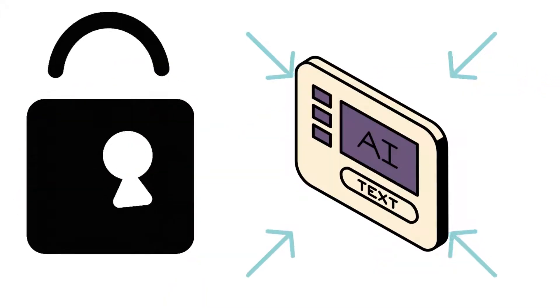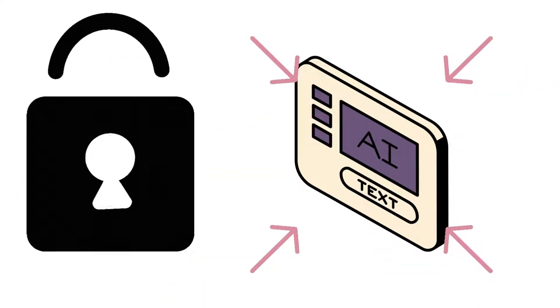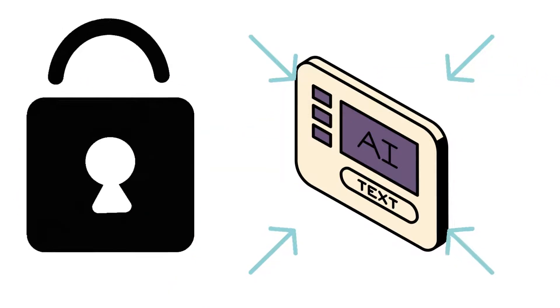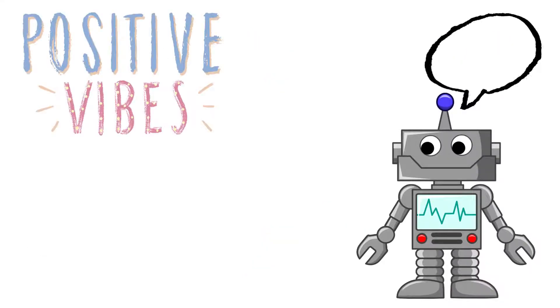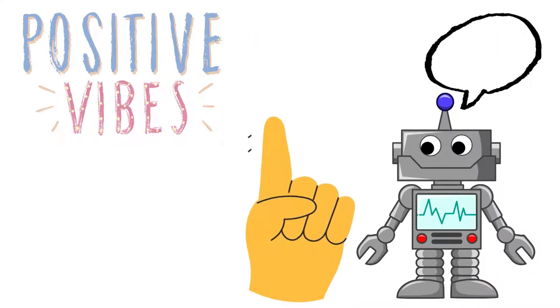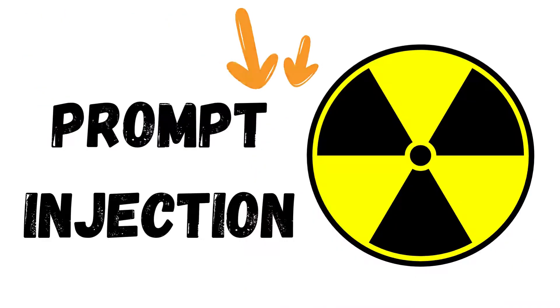When it comes to using AI, the security of the language model is incredibly important. How well it handles prompts can make a big difference, either creating a positive or negative impact depending on the type of instruction given. This is where prompt injection comes into play.